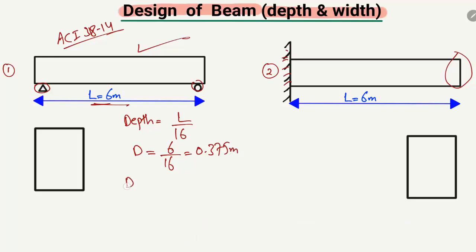We get 0.375 meters. Multiplying by 1000 gives us the depth in millimeters: 0.375 × 1000 = 375 millimeters. So the minimum depth for this simply supported beam is 375 millimeters.